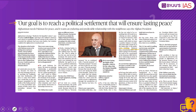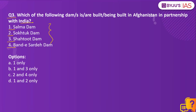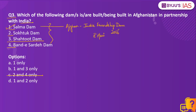All four are dams in Afghanistan. The Salma Dam, officially named the Afghan-India Friendship Dam, is a hydroelectric and irrigation dam project located on the River Hari in Herat province in western Afghanistan. It was inaugurated in 2016. This rules out any option without Salma Dam. Shatut Dam is the second major dam being built by India in Afghanistan, and will be constructed in the Kabul River Basin. Therefore, the right answer is option B — 1 and 3 only.